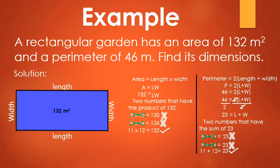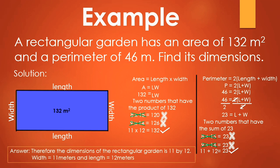Therefore, the dimensions of the rectangular garden are 11 by 12 — the width is equal to 11 meters and the length is equal to 12 meters.